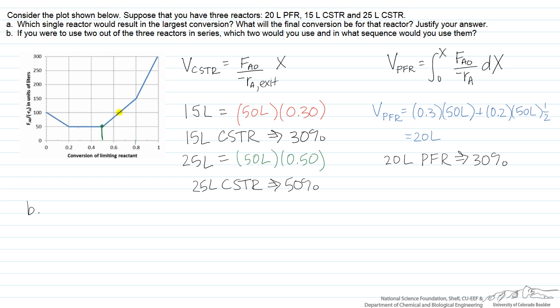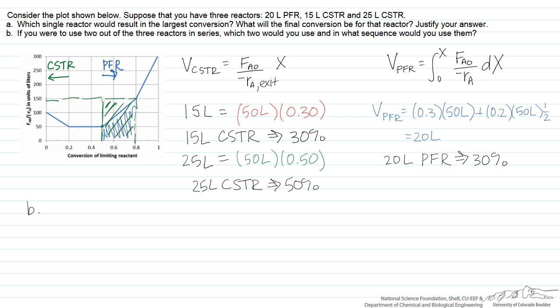Beyond 50% conversion, there is a discontinuity where the reaction rate decreases with conversion. For situations where the reaction rate decreases with conversion, it's usually advantageous to use a PFR rather than a CSTR, because the volume required for a PFR is proportional to the area under the curve, whereas the volume required for a CSTR would be proportional to the area of the entire rectangle including under the curve. Conversely, a CSTR is advantageous in the region where the rate actually increases with conversion. In the middle region, it doesn't matter which we use — this is zero-order type behavior.